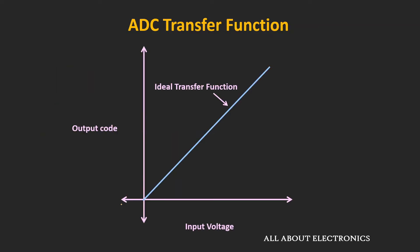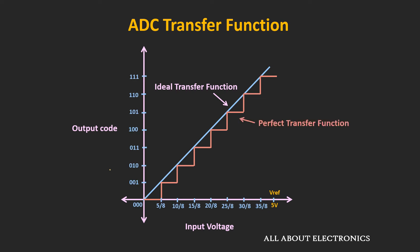Just to recall, the transfer function of the ideal ADC can be represented by a straight line, where 'ideal' means the resolution of the ADC is infinite. On the x-axis there is the input voltage, and on the y-axis we have the output code. But due to finite resolution, the transfer function looks like a staircase, known as the perfect transfer function. In this transfer function, the step size of each step is 1 LSB, and the quantization error is also equal to 1 LSB.